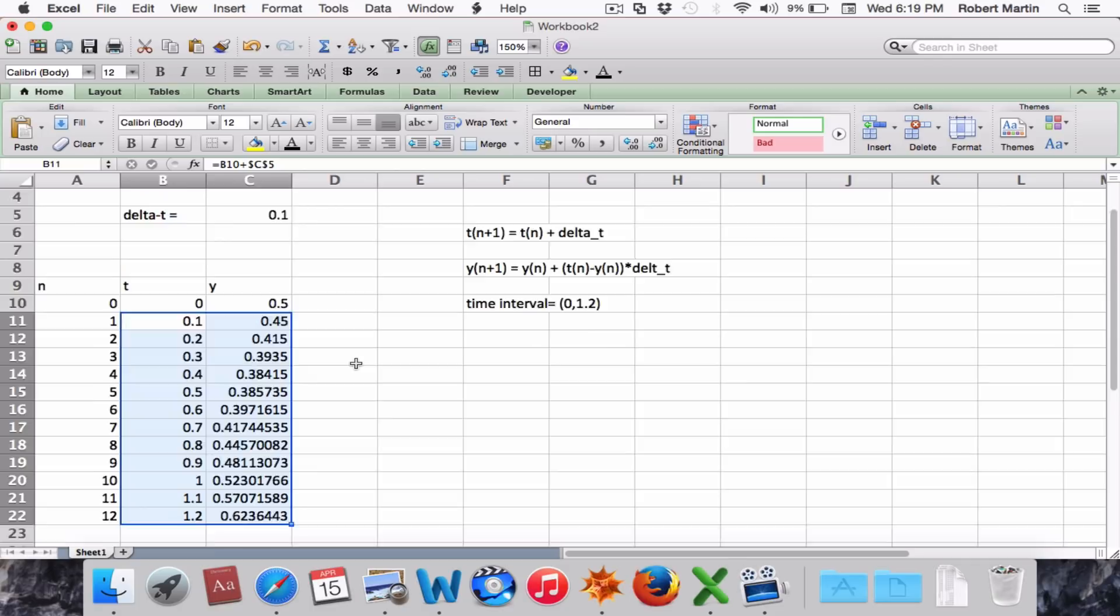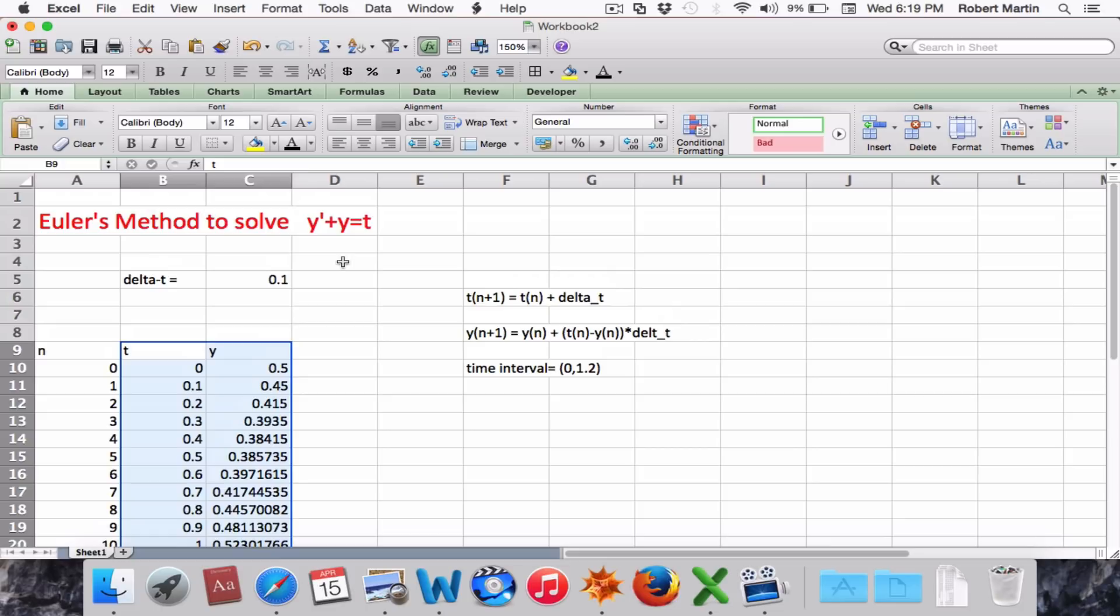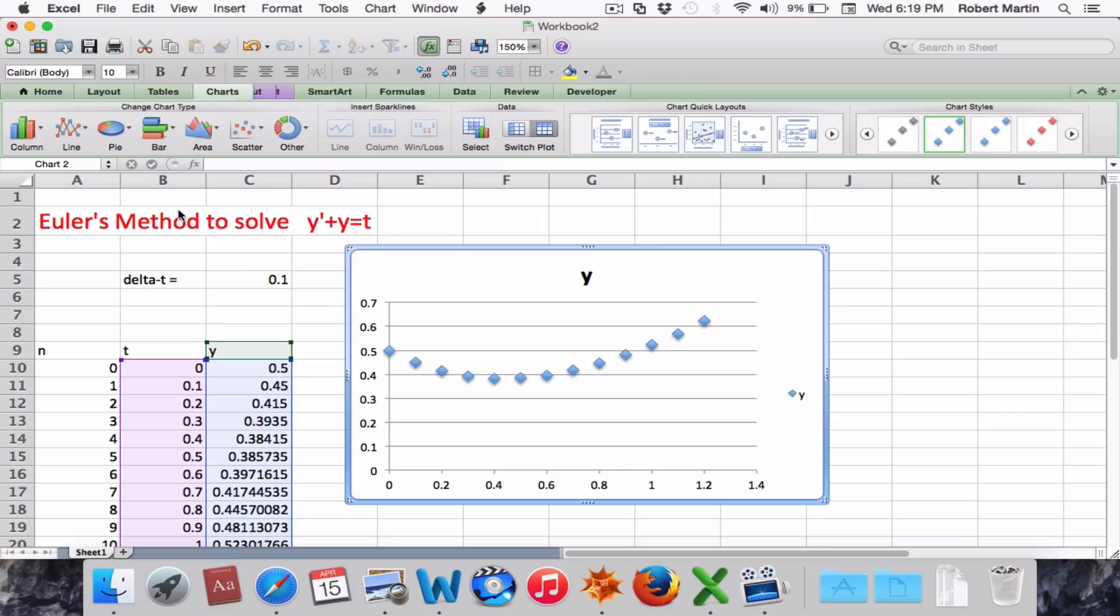So to graph our results, we will select the column for t and y, like this, and choose chart, choose scatter, and there's our result.